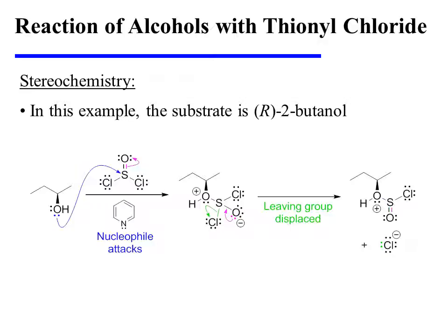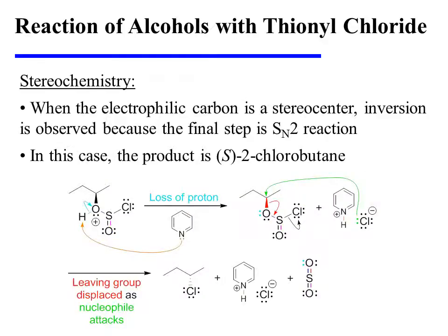Stereochemistry may sometimes be a concern in reactions of this type. In this example, the substrate is R-2-butanol, and the reaction begins with the attack of its hydroxyl group on the electrophilic sulfur, displacing pi electrons onto oxygen as a lone pair. When that lone pair reforms the pi bond, chloride is displaced from the molecule. In the next mechanistic step, pyridine removes a proton from the oxonium ion, thereby neutralizing its charge.